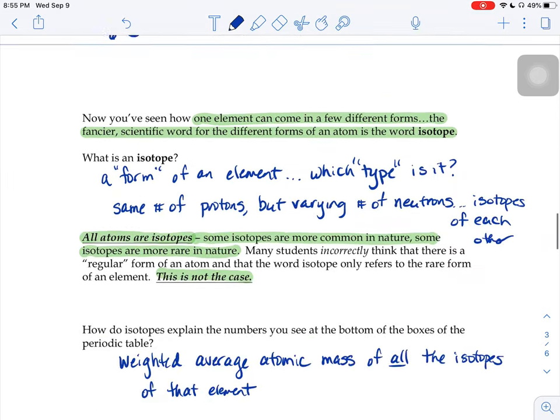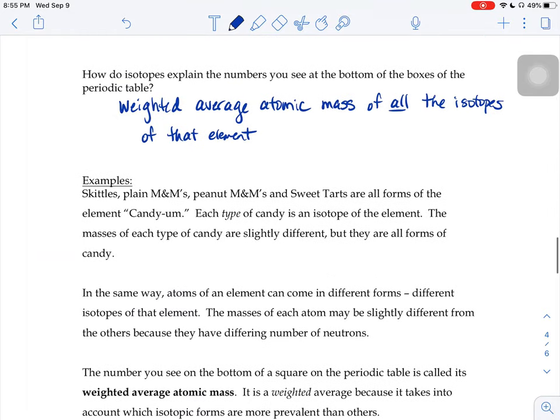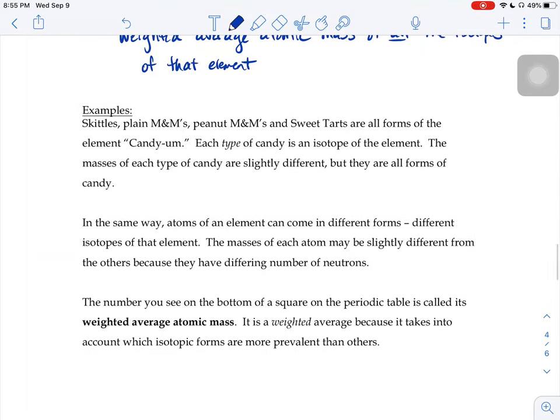So just another example of what isotopes are all about and weighted averages. Just to kind of put it in terms of food, what if you had Skittles, plain M&Ms, peanut M&Ms, and sweet tarts? All of those are forms of the element candium, right? They're all types of candy. And so we would say that they're all isotopes of the fake element candium. But the masses of each type of candy are a little bit different, right? Like a peanut M&M weighs a little bit more than a plain M&M does.